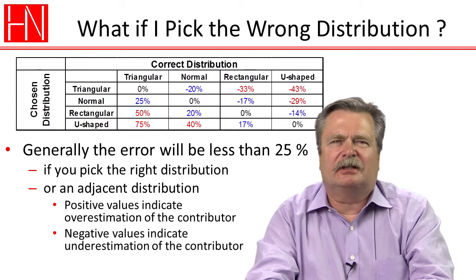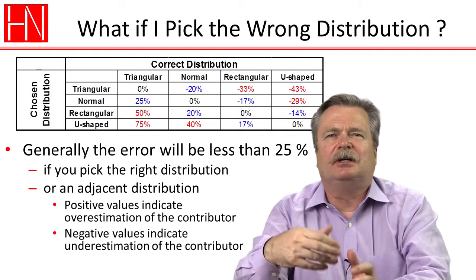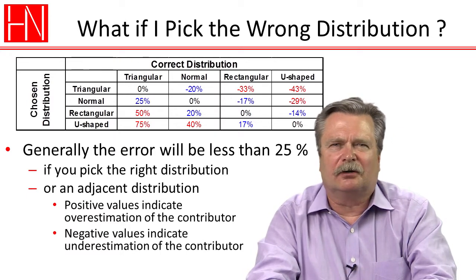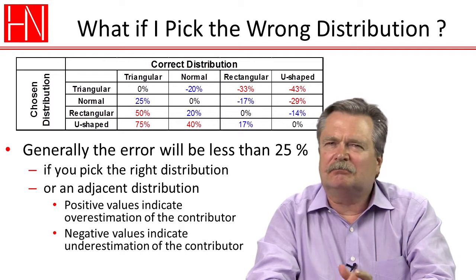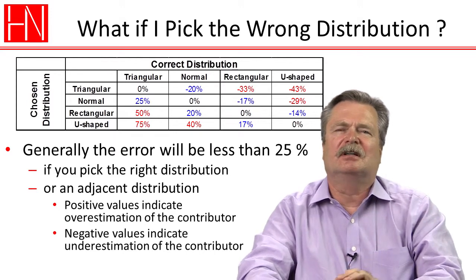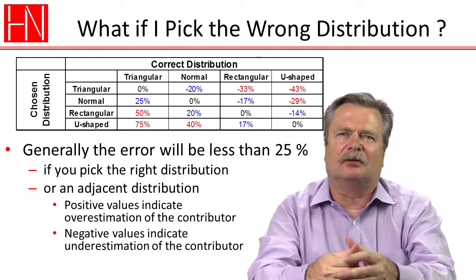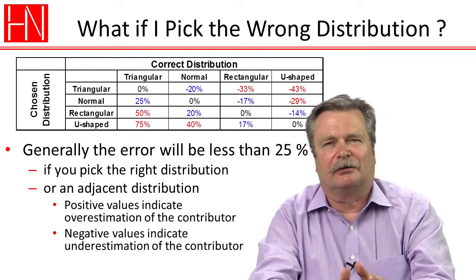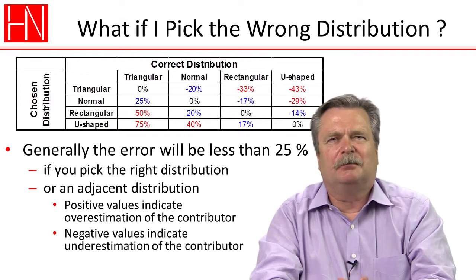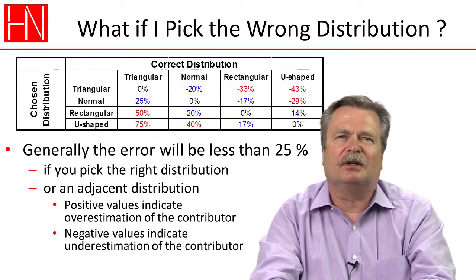As it turns out, there are other limitations in uncertainty estimation — for example, from repeatability studies. For a typical number of measurements in a study, you get potential errors of the same order of magnitude as this. So picking a wrong distribution doesn't make everything fall apart. It may make you over- or underestimate your uncertainty for a particular contributor by 20%, maybe 25% — which is on the same level as other potential errors in the uncertainty budget.